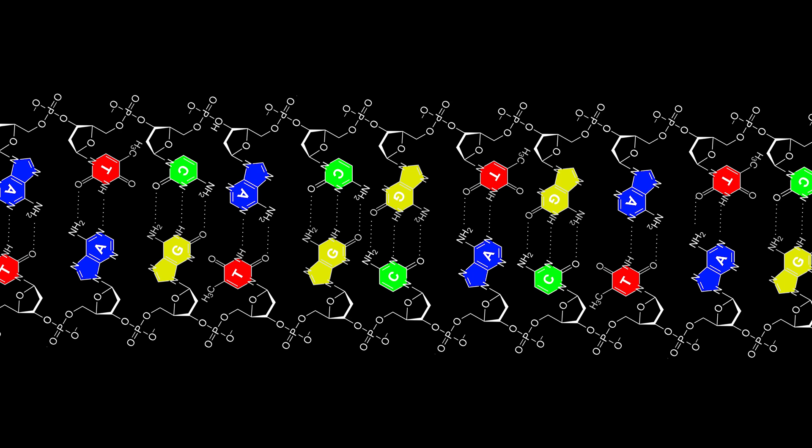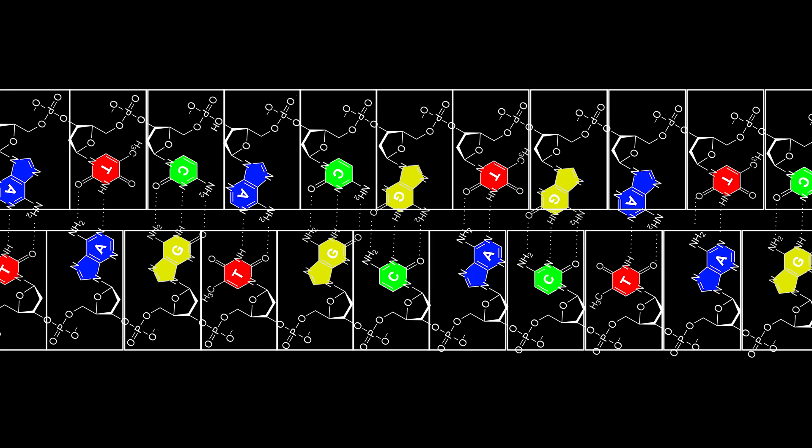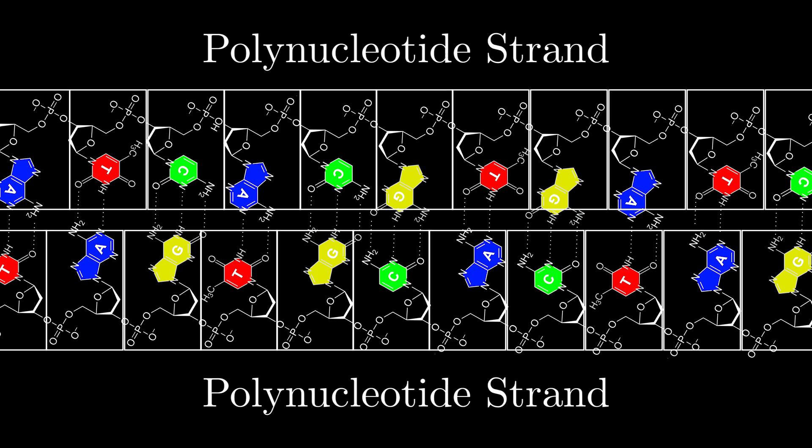Notice how DNA is made of two strands. Each strand consists of many nucleotides, and is therefore called a polynucleotide strand.